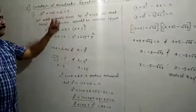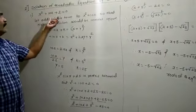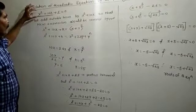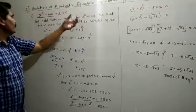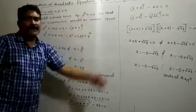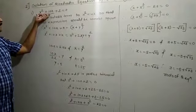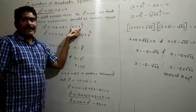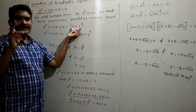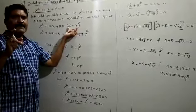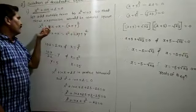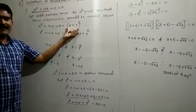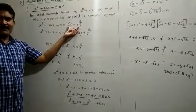Since the last term is not a perfect square, we need to add a suitable term to x squared plus 10x so that the new expression becomes a complete square. We add k to x squared plus 10x, and then the new expression will equal (x + y) squared. Whatever b comes, it will be the perfect square of (x + y) squared.